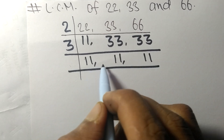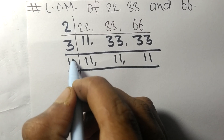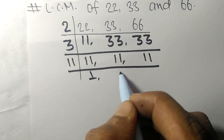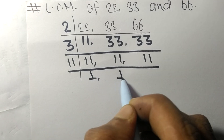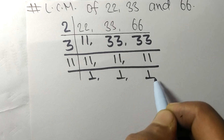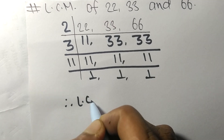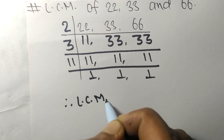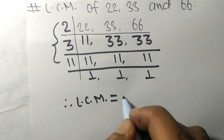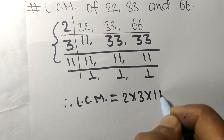Now all these numbers are divisible by 11: 11 times 1 means 11, for all three. So the LCM is equal to 2 times 3 times 11, reading from the division side.